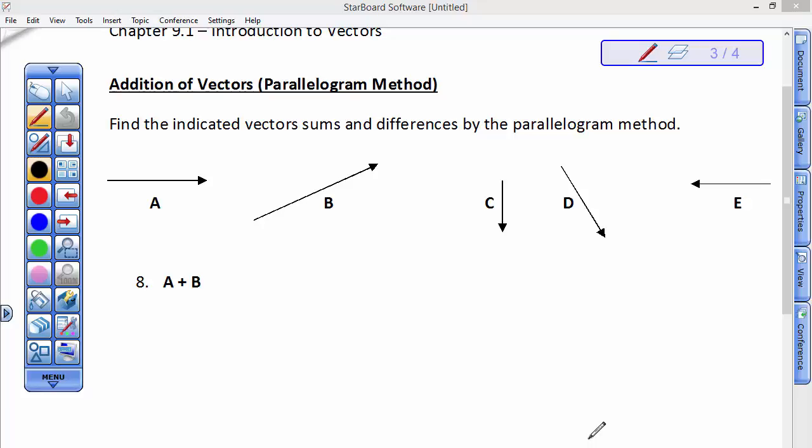It's an important method to understand because as we continue to study vectors a bit further, our goal is going to be, let's say we have a plane that's heading 450 miles per hour in an easterly direction, but the wind's out of the southwest, how is that wind affecting the direction and the speed of the plane?